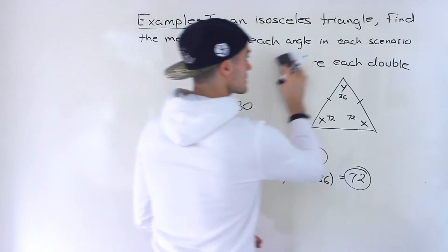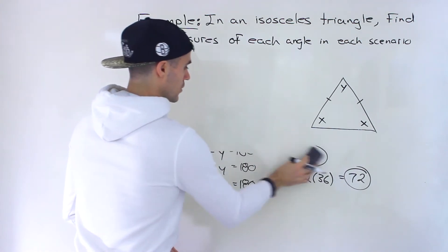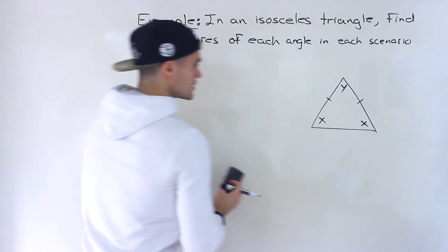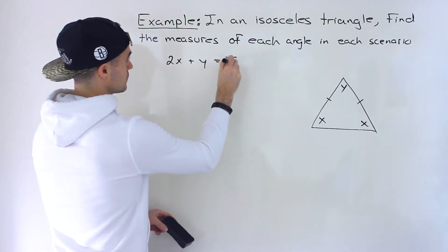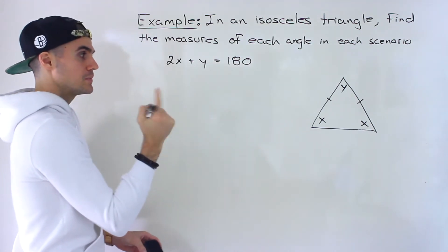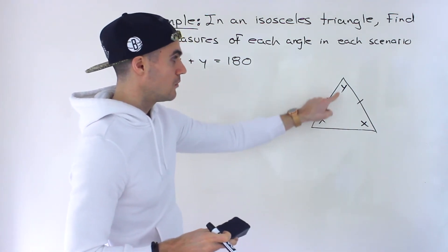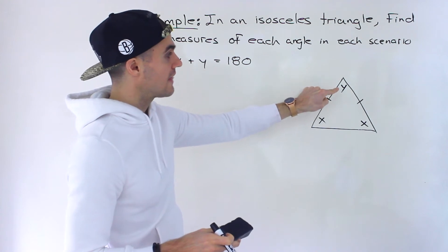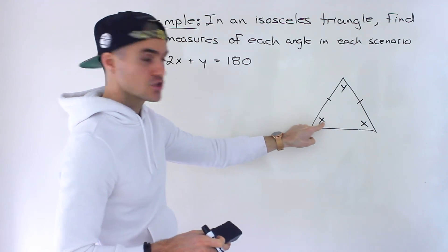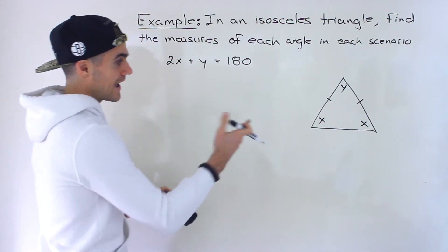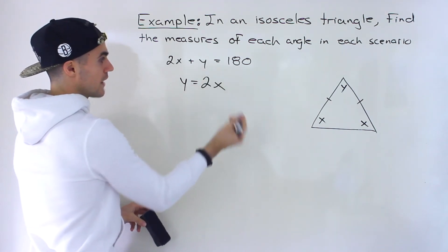Now let's continue with Part B. That one equation remains the same: 2x plus y equals 180. In Part B, instead of the equal angles being double the third angle, we're told the third angle is double each of the equal angles. So instead of x equals 2y, we now have y equals 2x.